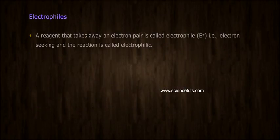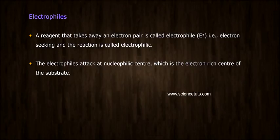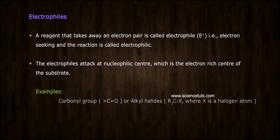Electrophiles. A region that takes away an electron pair is called electrophile, E+, that is electron-seeking, and the reaction is called electrophilic. The electrophiles attack at nucleophilic center, which is the electron-rich center of the substrate. Example: carbonyl group or alkyl halides R3C-X, where X is a halogen atom.